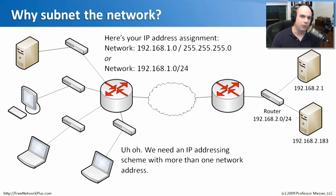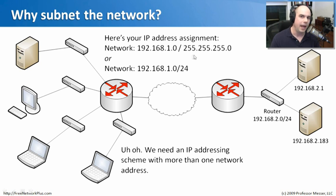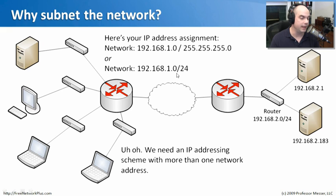Let's say your ISP, or your internal network department — maybe you're at a remote site — has said: your network is 192.168.1.0, and your subnet mask is 255.255.255.0. Or they may just say your network is 192.168.1.0 slash 24. That's the CIDR block notation we were talking about earlier. Those are exactly the same thing, as you recall from our previous video.